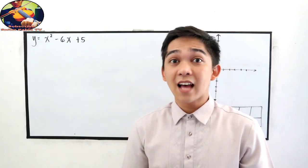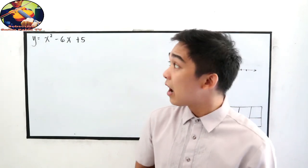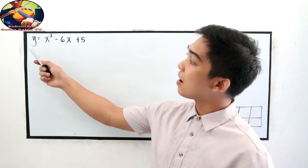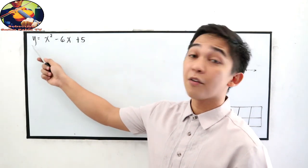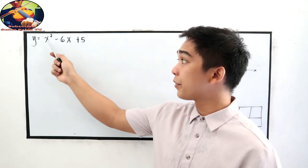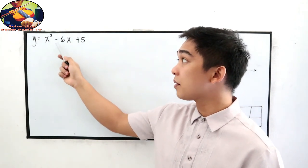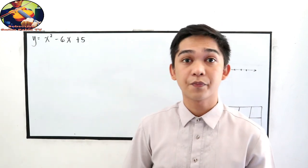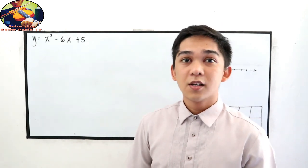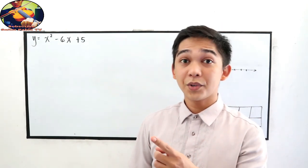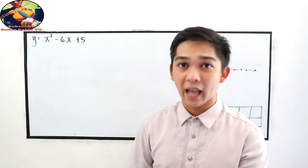In this lesson, we will discuss how to graph a quadratic function. Let's say we have f(x) or y is equal to x squared minus 6x plus 5. The first step is we need to find the vertex.